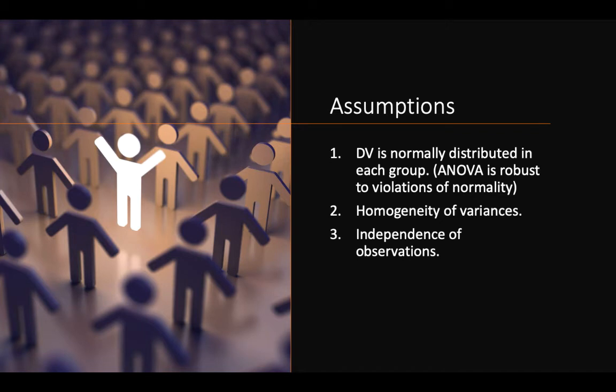As with other analyses, ANOVA comes with assumptions that need to be upheld. The dependent variable should be normally distributed in each group; however, ANOVA is a robust analysis and is okay with violations of normality. We also need to assume homogeneity of variance — this should not be violated. If you violate the homogeneity of variance assumption, you need to run a non-parametric analysis. Additionally, we need independence of observations, where observations do not rely on each other.